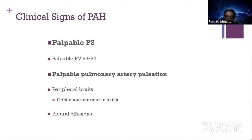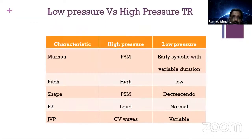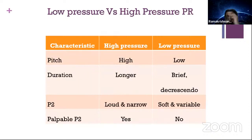You should look for peripheral bruits in a patient with so-called Eisenmenger syndrome or pulmonary hypertension — because peripheral PS or chronic thromboembolic PH can mimic it. Always know the auscultatory signs of pulmonary hypertension: loud P2 comparable to A2, palpable P2 (always abnormal except in increased flow states like ASD), RV S3 and S4, constant ejection click, murmur of TR, ejection systolic murmur, and murmur of PR. Prominent PR murmur is a common feature of PDA with pulmonary hypertension.